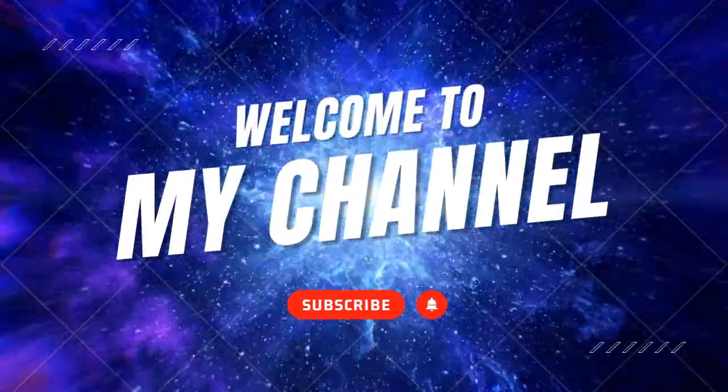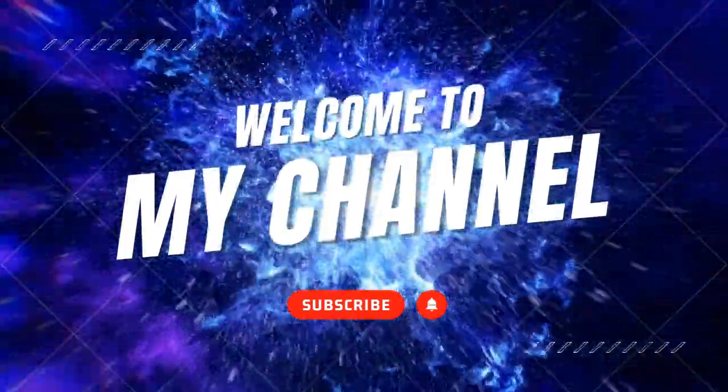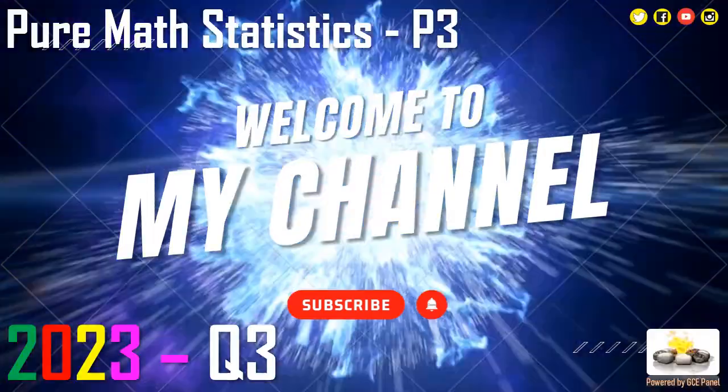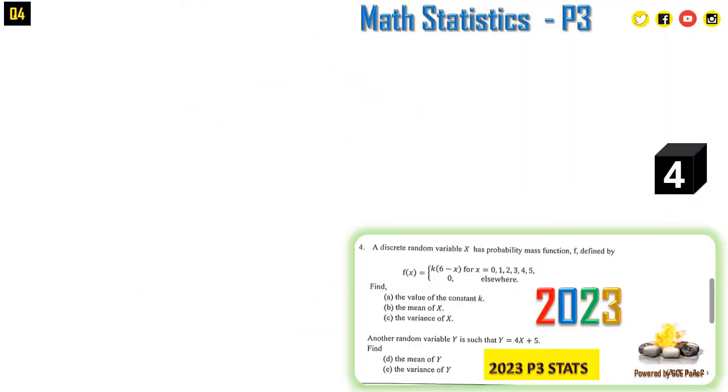Let's dive directly into the question. This question reads: a discrete random variable X has probability mass function f defined by f(x) = k(6 - x) for x = 0 up to 5 and 0 elsewhere. Find a) the value of the constant k.